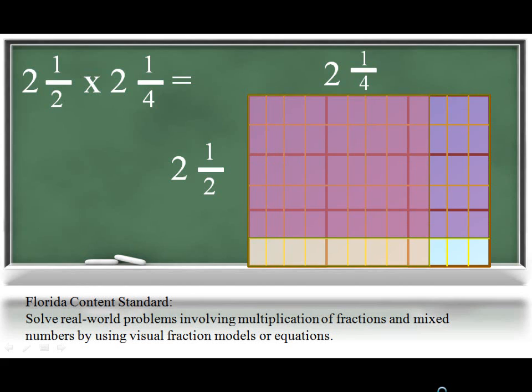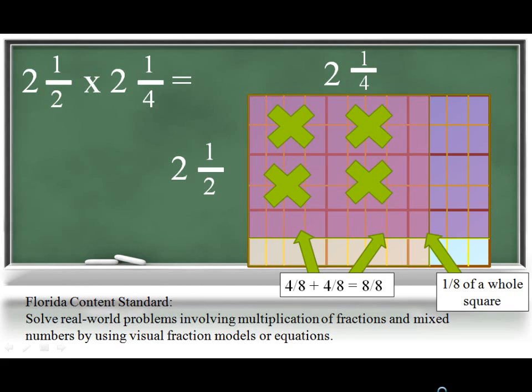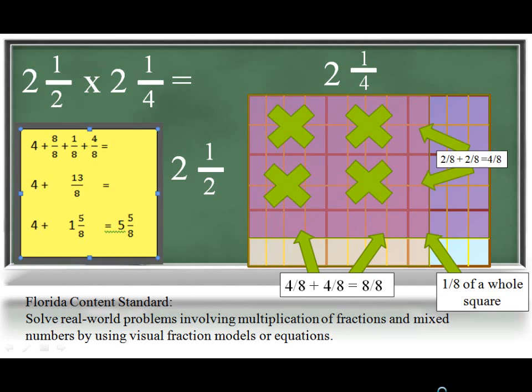If we look at the model, we have now created a common unit of eighths as each whole square has been split into 8 equal parts. We could find the product of 2 and 1 half times 2 and 1 fourth by adding up all of the eighths in each section. 4 whole squares plus 8 eighths plus 1 eighth plus 4 more eighths would give us a total of 13 eighths or 5 and 5 eighths.